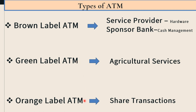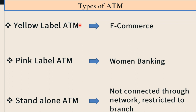The next one is Orange-label ATM. The ATM which is provided for share transactions is known as Orange-label ATM. Then the next type is Yellow-label ATM. The ATM which is provided for electronic commerce or e-commerce services is known as Yellow-label ATM. Then, for women banking, there is another type of ATM known as Pink-label ATM, which is provided for transactions related to women banking.